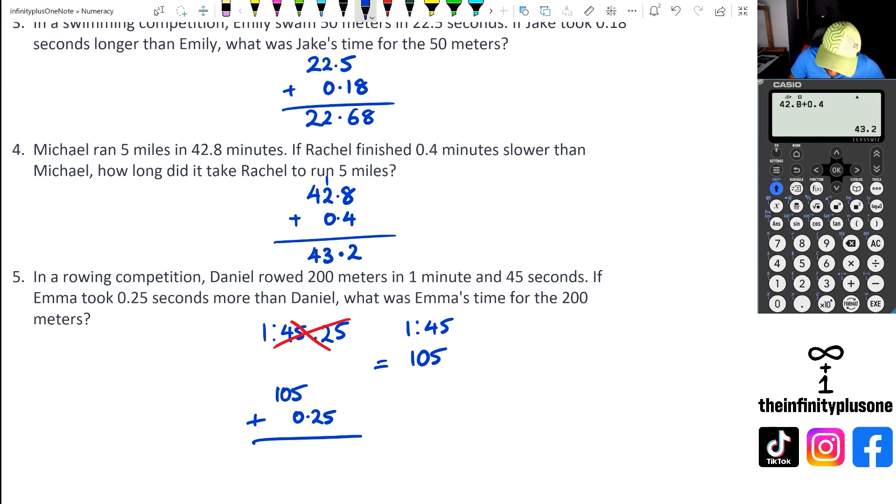So I've got 0 plus 5 is 5, 0 plus 2 is 2, 5 plus 0 is 5, and then I've got 105.25 seconds. So the way I'd write this answer is 105.25 seconds, because in your calculator if you did 1.45, that's actually not 1 minute 45 seconds, because remember, 45 seconds is like, when you think of seconds, it's actually out of 60.